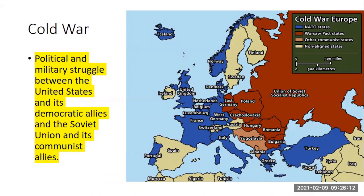The Soviet Union refuses to give these red countries — Poland, Czechoslovakia, Hungary, Romania, Bulgaria — free elections. And instead, they establish communist governments. So they had actually broken a promise to us. Stalin broke his promise to allow these countries to have free elections. And from this point onwards, the Soviet Union becomes our enemy.